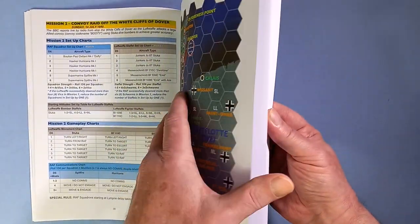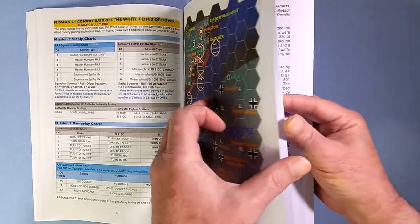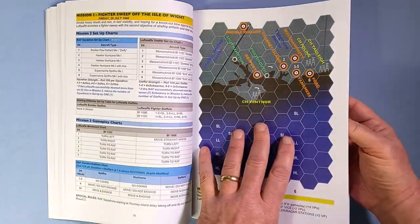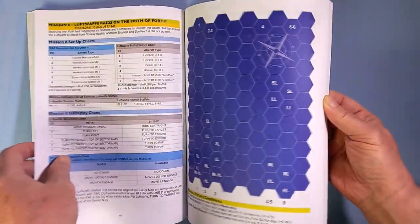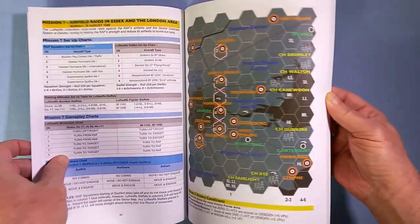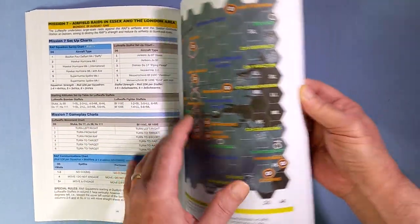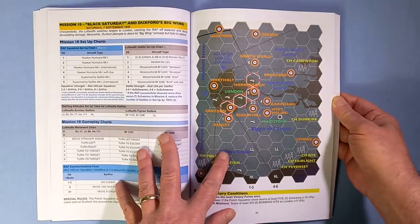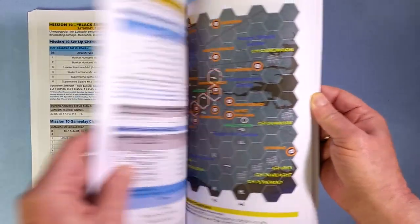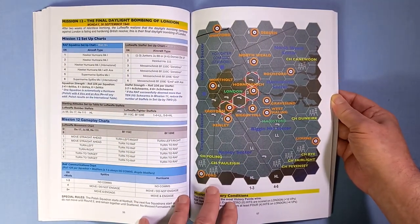And then mission two, and so on. I won't go through them all. There's mission three, and then we go into phase two with more missions and so on. So yeah, a bit of printing to do. I don't mind that - making up counters and all that sort of thing.